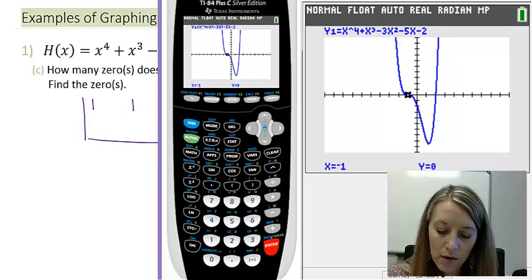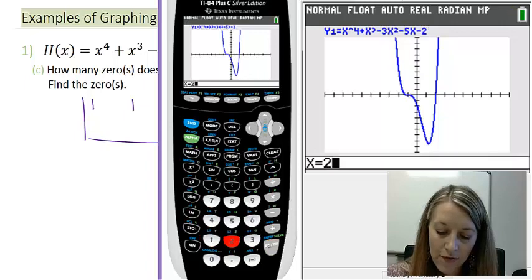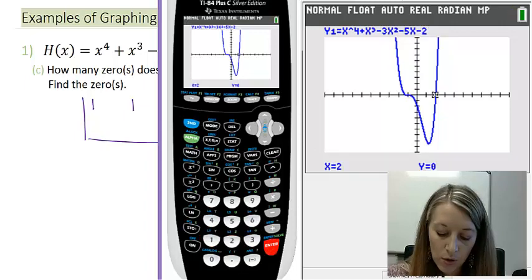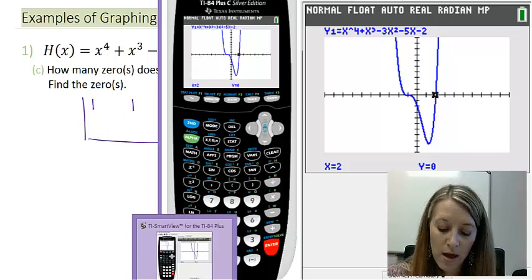Let's confirm that these are zeros. If I type in negative 1, I do get a zero. And if I type in 2, I also get a zero. That tells me two of my four zeros.